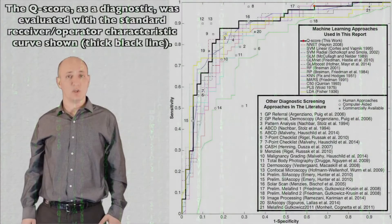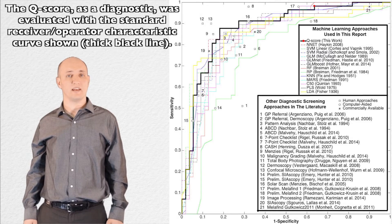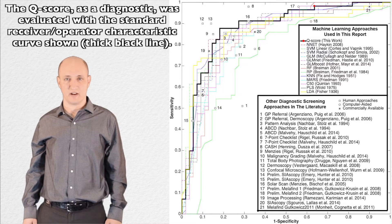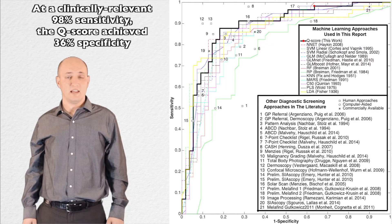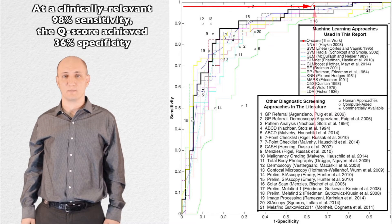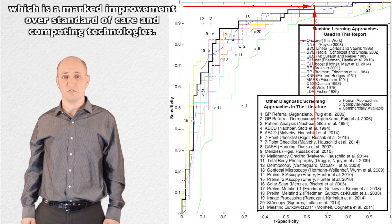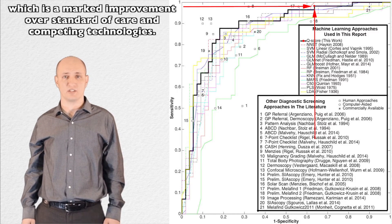The Q-score, as a diagnostic, was evaluated with the standard receiver-operator characteristic curve, shown in thick black line. At a clinically relevant 98% sensitivity, the Q-score achieved 36% specificity, which is a marked improvement over standard of care and competing technologies.